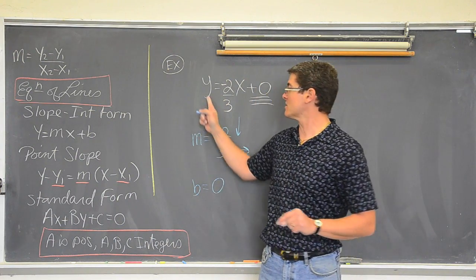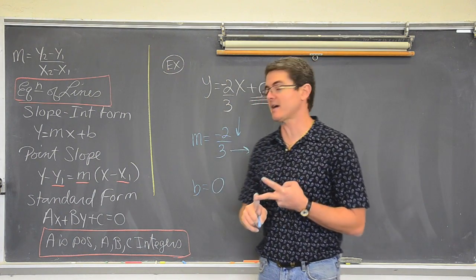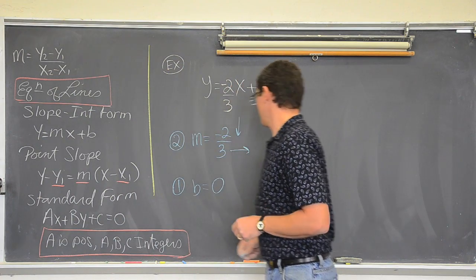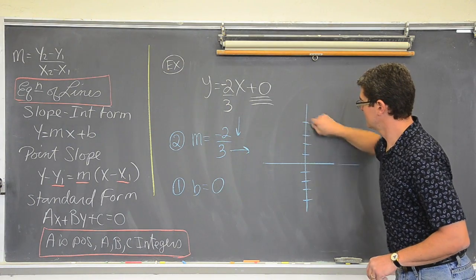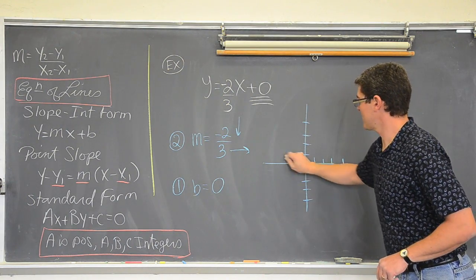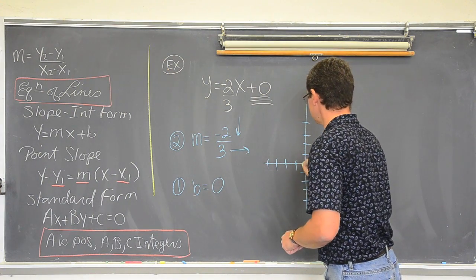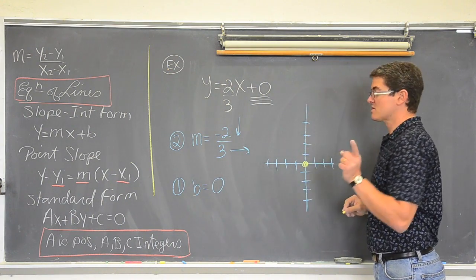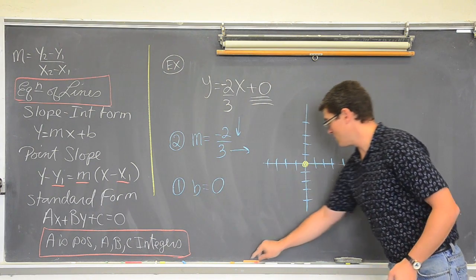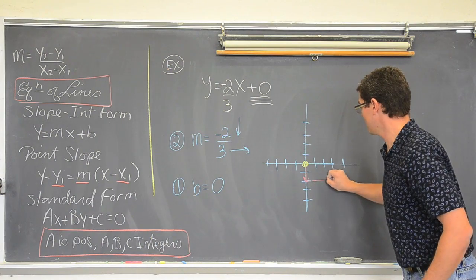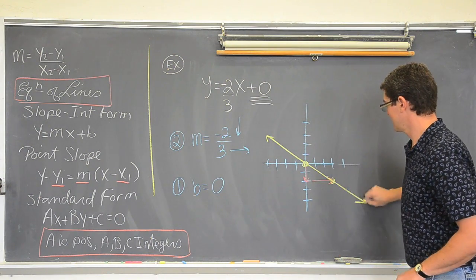When you are in slope-intercept form, you want to graph with the y-intercept first and the slope second. Y-intercept is zero — done. Slope: down two over three, down two over three to make my new point. And there is my line.